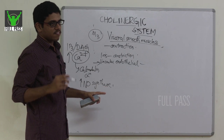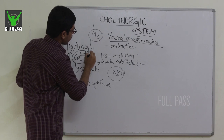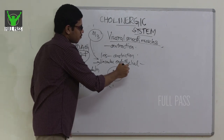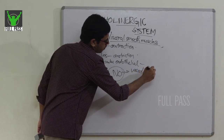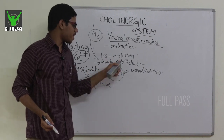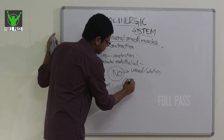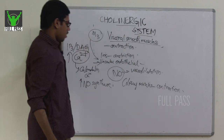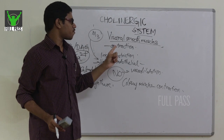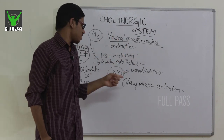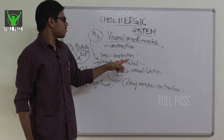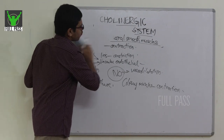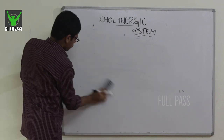The calcium-calmodulin complex increases the activity of nitric oxide synthase, resulting in nitric oxide formation. When acetylcholine acts via M3 receptors on vascular endothelial cells, nitric oxide is released, causing vasodilation — not through direct action but through nitric oxide synthesis. M3 also acts on ciliary muscles causing contraction. Key functions: contraction of visceral smooth muscles, pupillary constriction, ciliary muscle contraction, and vasodilation via nitric oxide.